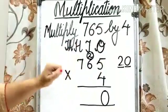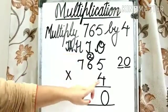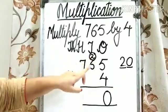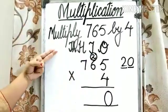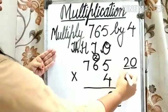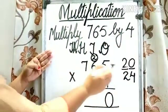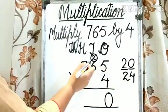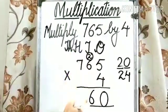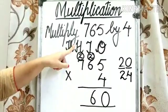Step 2: multiply the digit at the 10s place by 4, meaning we need to multiply 6 by 4. 6 4s are 24. We have to add the carry to 24, so 24 plus 2 is 26. Write down 6 under the 10s column and carry over 2 to the 100s place.